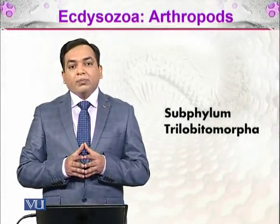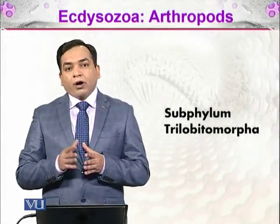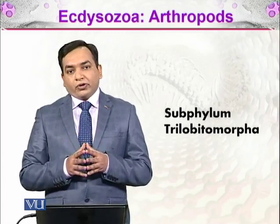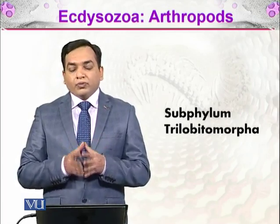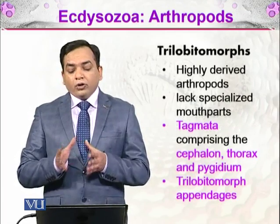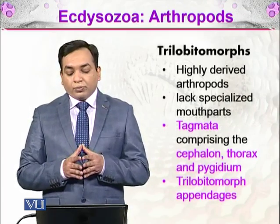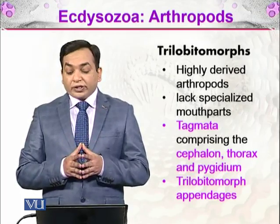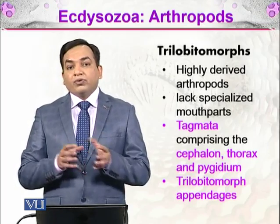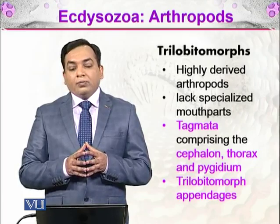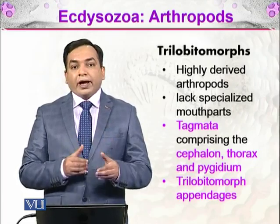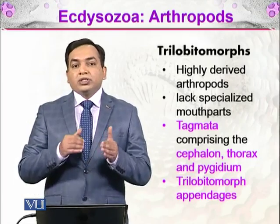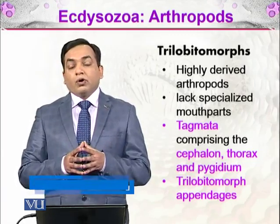In the arthropods, we will be discussing about the subphylum Trilobytomorpha. Trilobytomorpha are organisms resembling trilobites. They are highly derived arthropods lacking specialized mouthparts. They have tagmata, meaning different body regions: the cephalon (head), the thorax, and the pygidium, which is the abdominal part — similar to what we can see in modern insects.